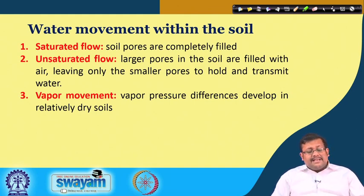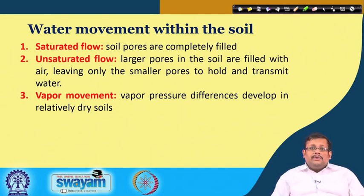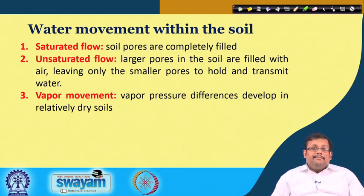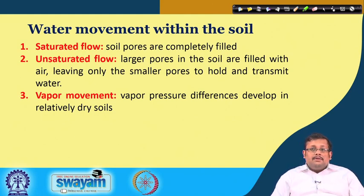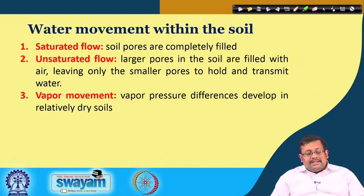In saturated flow, soil pores are completely filled with water. Unsaturated flow occurs when larger pores in the soil are filled with air, leaving only the smaller pores to hold and transmit water. Vapor movement occurs due to vapor pressure differences that develop in relatively dry soil.